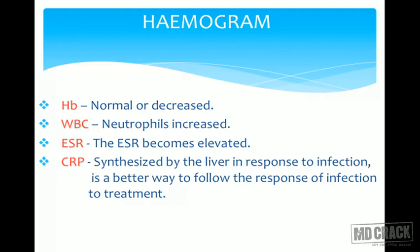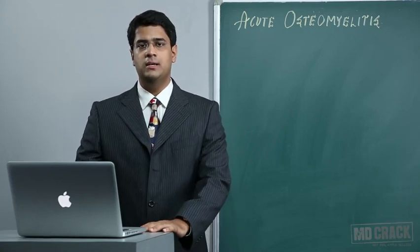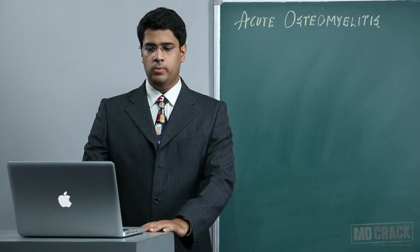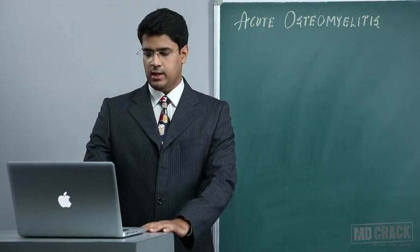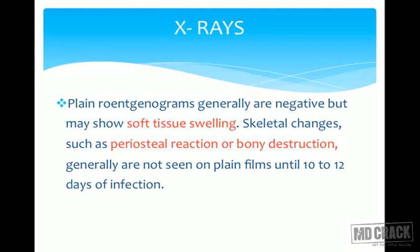Investigations — hemogram: hemoglobin is always reduced and rarely normal. The WBC count is increased with generally elevated neutrophil count. ESR (erythrocyte sedimentation rate) becomes elevated, as does CRP (C-reactive protein), which is synthesized by the liver in response to infection and is a better way to follow up response to treatment. Regularly perform blood counts — especially hemoglobin, WBC count, ESR, and CRP — to monitor progress once treatment has started.